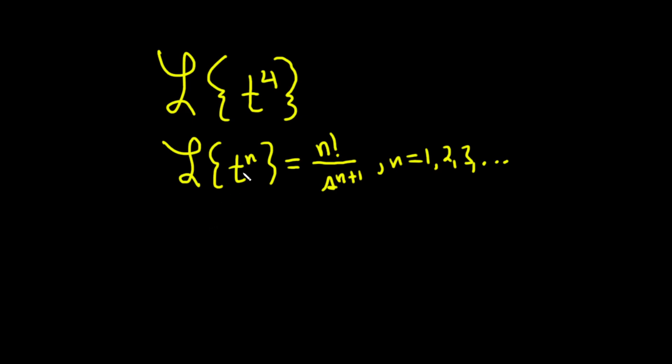However, it's also true for n equals 0, because when n equals 0, we have the Laplace transform of t to the 0, which is the same thing as the Laplace transform of 1, which you know is 1 over s via memorization. But here if we apply the formula we get 0 factorial over s to the 0 plus 1, and so we get 1 over s.